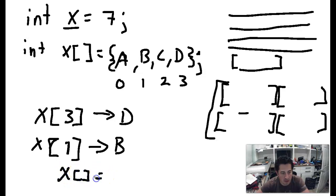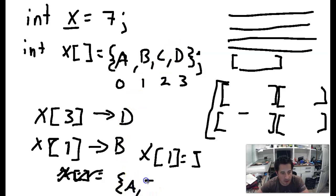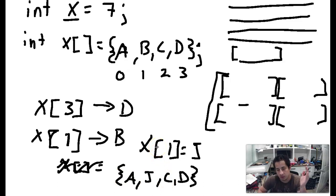An array is really just a series of buckets for values. You can also change those values — for example, setting x[1] equal to j would replace that element, making the array a, j, c, d. This is a very useful tool for storing a bunch of values that go together. For example, if you wanted to control a bunch of LEDs all at once, you could store their pin numbers in an array and loop through it to perform some operation on each of those pins.